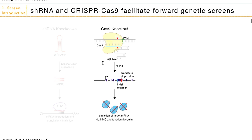The way a Cas9 knockout works is that you can cleave the mammalian genome at a precisely designated site guided by a guide RNA. Once you cut that site, there is most likely NHEJ-mediated repair, which means there's an insertion or a deletion. From there, you are likely to get a frameshift in your protein sequence, which leads to depletion of your target mRNA and protein.